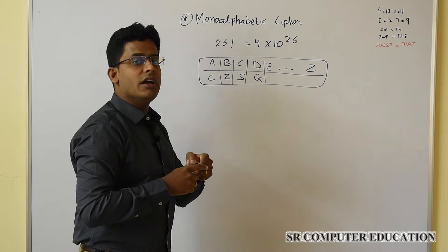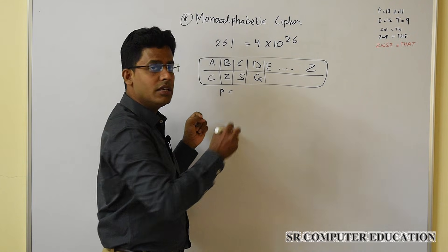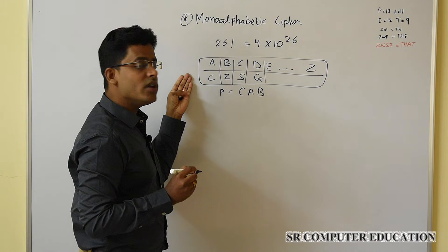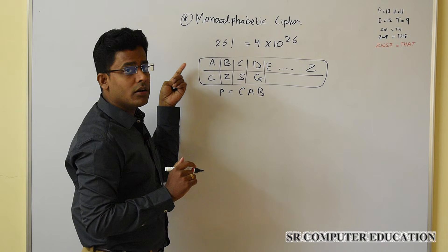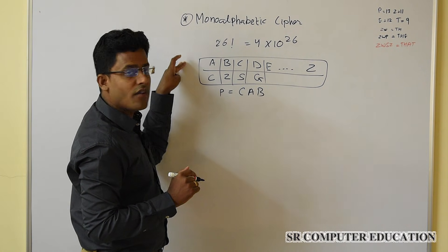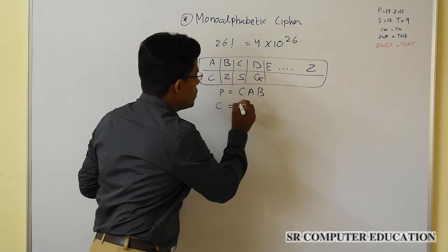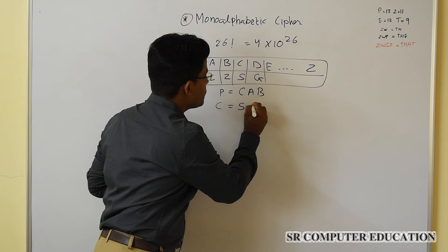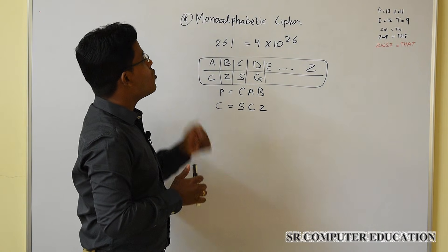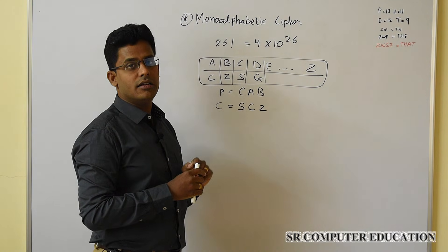To do encryption, suppose your plain text is CAB. For doing encryption, simply substitute your letter from the key table you have made. For C, you substitute S; for A, you substitute C; for B, you substitute Z. So the cipher text for the plain text CAB using mono-alphabetic cipher is SCZ. It is as simple as that.